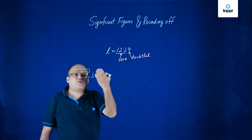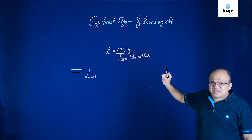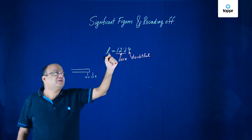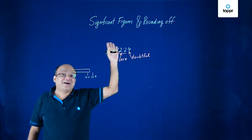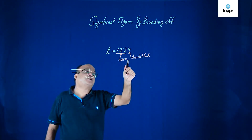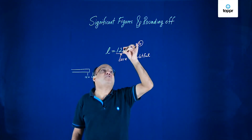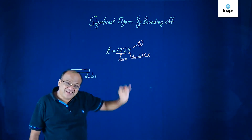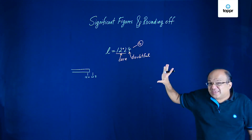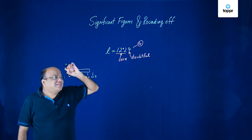I can take it as 4, somebody can take it as 5, somebody else can take it as 6. So the significant digits are the number of digits in the measured value about the correctness of which we are sure, plus one more doubtful digit — those are called significant digits. This reading has got 4 significant digits. Significant digits tell us up to how many decimal places our reading is okay. One doubtful digit is allowed.